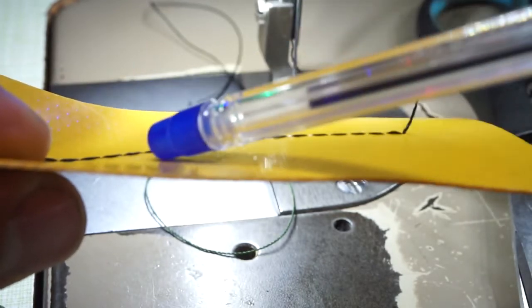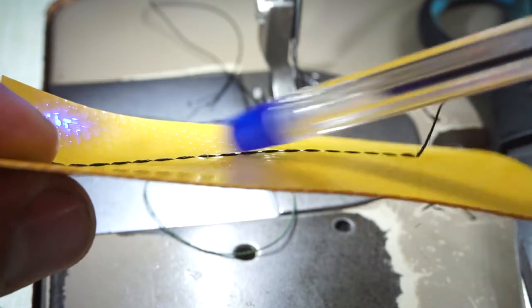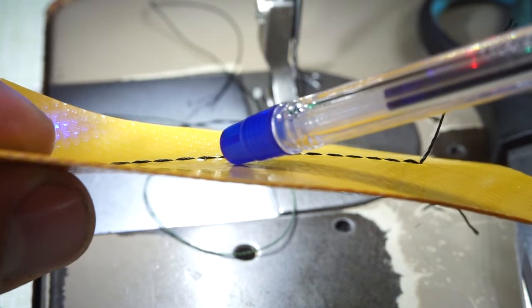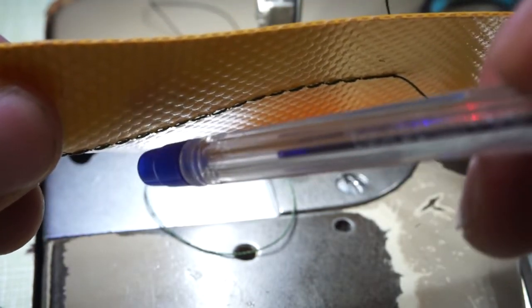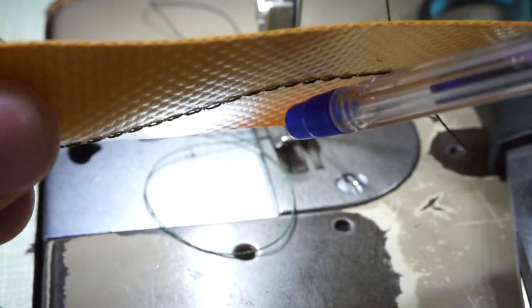If the thread is going upwards here and it's nesting on the top side, you need to correct your top side thread tension. And if it's nesting on the lower side, you need to correct the lower side thread tension.